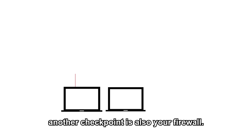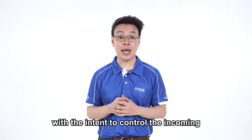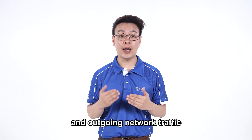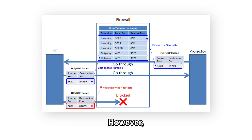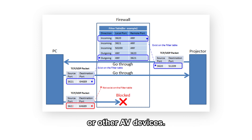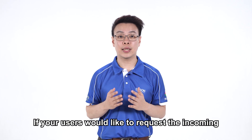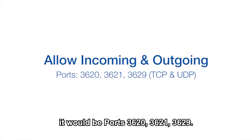Another checkpoint is your firewall. Most organisations have a firewall with the intent to control the incoming and outgoing network traffic based on an applied rule set. However, firewall can restrict access to your projectors or other AV devices. If your users would like to request the incoming and outgoing port numbers for our projectors, they will be port 3620, 3621, and 3629.